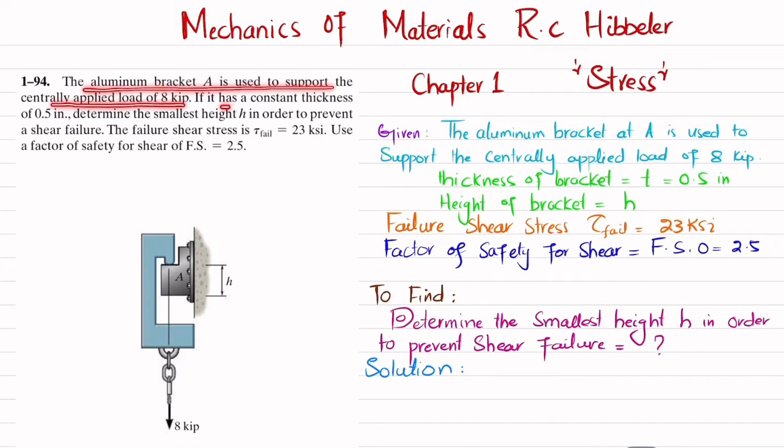of 8 kip. If it has a constant thickness of 0.5 inch, determine the smallest height h in order to prevent a shear failure. The failure shear stress is 23 ksi. Use a factor of safety for shear of 2.5.